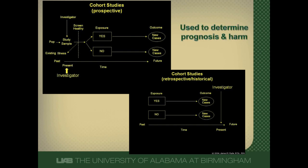Cohort study designs can be used to determine prognosis and harm. Prognosis is: once people have a disease, we look to see what happens to them. Harm is: people who don't have disease yet — we look to see the risk or rate of them developing new disease. So the same study design can be used in two different ways. The measure of association between exposure and disease in a cohort study is a relative risk.